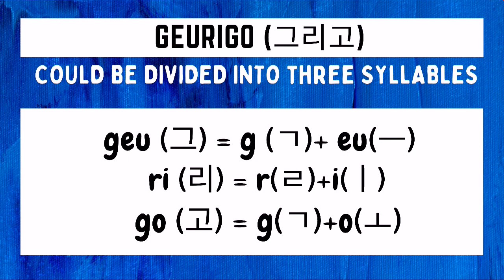Now, how do we write kurigo in Hangul? Let's start with the first syllable. To write the syllable gu in Hangul, we need to draw first a gi character followed by a u character. For the second syllable ri, we need to draw first a rieul character followed by an i character. For the last syllable go, we need to draw first a gi character followed by an o character. Then we just combine the Hangul for each of these syllables to form the Hangul of the word kurigo.